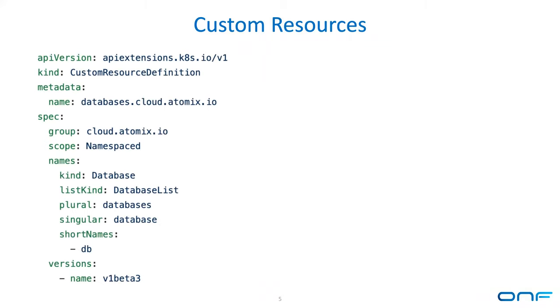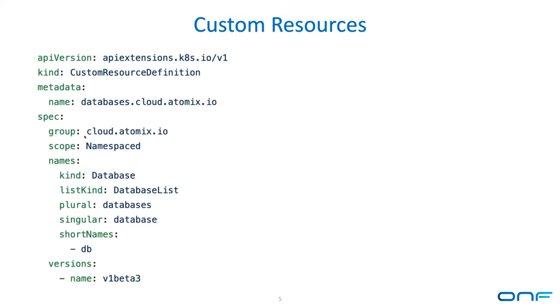The first step to creating an operator is defining a custom resource. There's a specific type of object you can create in Kubernetes called the Custom Resource Definition (CRD). This is how you create your own objects. Another project that also does this is Atomix, which we use in micro ONOS to store a lot of state. This is an example of Atomix's custom resource definition to define a database object.